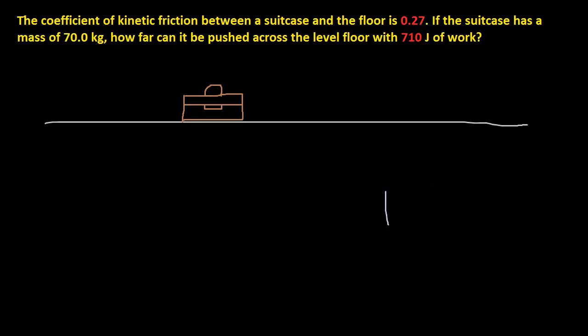In our free body diagram, I'm going to draw it with the same color as the suitcase. There's a force that's being applied that way. So that's going to be our force that we're going to apply. And we have an opposition force, which is going to be friction of kinetic motion. And that's going to equal 0.27 times the normal force.